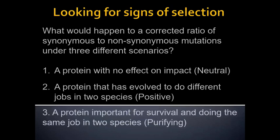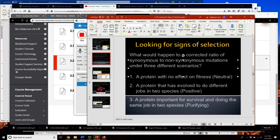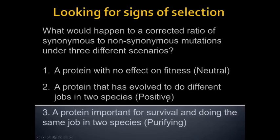A protein with no effect on fitness would be the neutrally evolving one. A protein that has evolved to do different jobs in two different species represents positive selection. And a protein important for survival doing the same job in two species represents purifying selection. That's just a review of what we discussed.